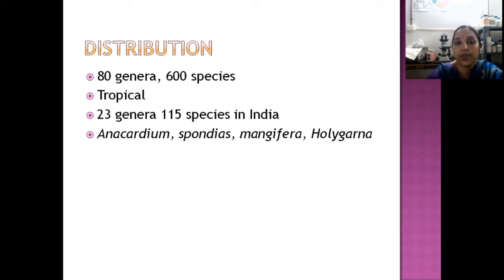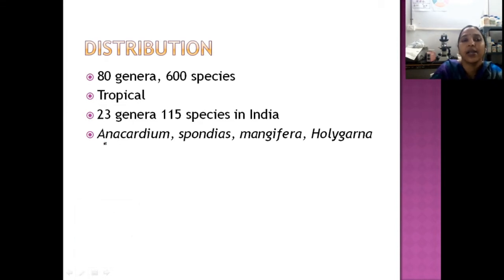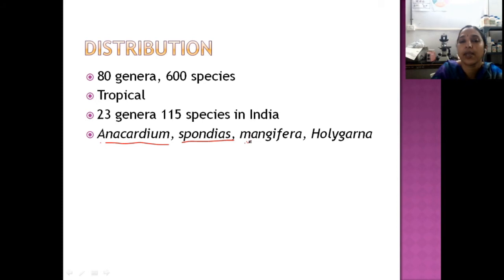There are 23 genera present in India. The major ones among them are Anacardium, Spondias, Mangifera, and Holigarna. You are familiar with all of these plants. I will give you the Malayalam names: Anacardium is our common cashew, Spondias is Ambalanga, Mangifera is mango, and Holigarna is Cherumaram.